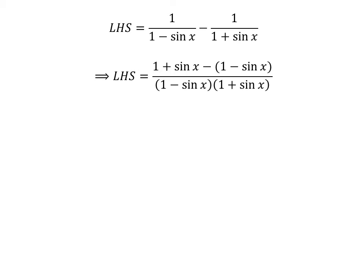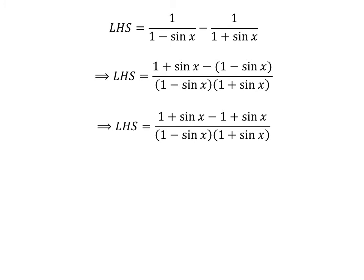Addition of the fractions gives us the left hand side equal to 1 plus sin(x) minus 1 minus sin(x), all upon 1 minus sin(x) times 1 plus sin(x). We know 1 minus sin(x) times 1 plus sin(x) equals 1 minus sin²(x). Cancelling out the plus 1 and minus 1 gives us the left hand side equal to 2 times sin(x) upon 1 minus sin²(x).